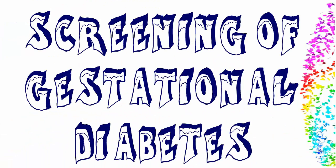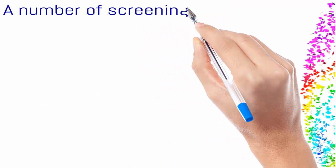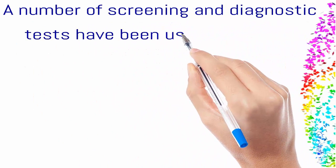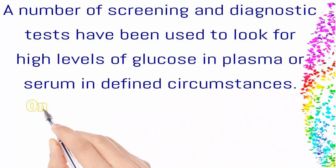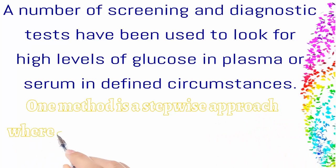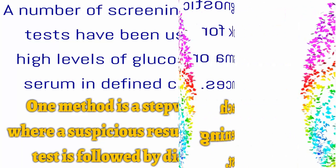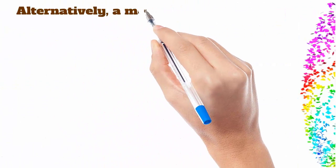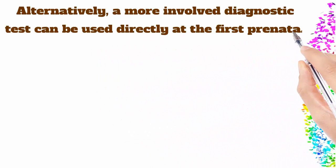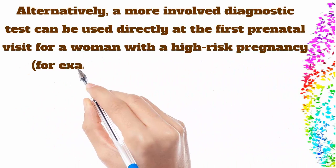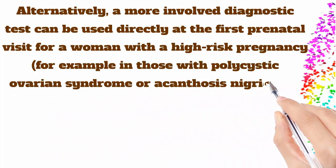Screening of gestational diabetes: a number of screening and diagnostic tests have been used to look for high levels of glucose in plasma or serum in defined circumstances. One method is a stepwise approach where a suspicious result on a screening test is followed by a diagnostic test. Alternatively, a more involved diagnostic test can be used directly at the first prenatal visit for a woman with a high-risk pregnancy — for example, in those with polycystic ovarian syndrome or acanthosis nigricans.